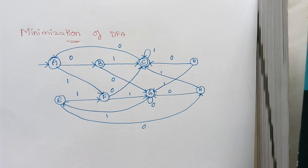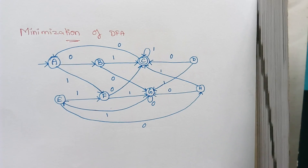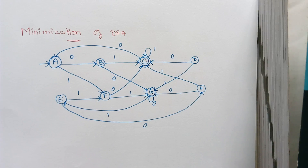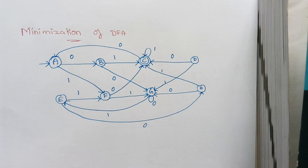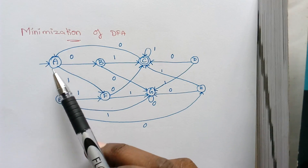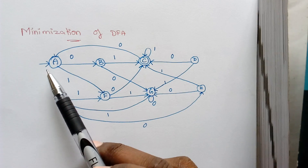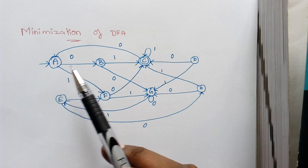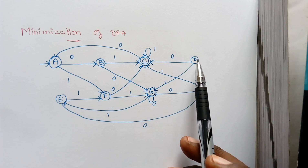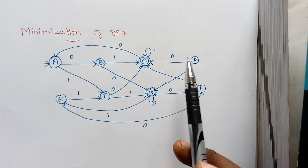The first step in the minimization of DFA is we have to check for all unreachable states. An unreachable state is one which cannot be reached from the starting state. The reason why we want to eliminate unreachable states is that whatever input we are processing in a DFA, the transition starts from the starting state. When we start from the starting state for some input, if we cannot reach any state, then that state is called an unreachable state.